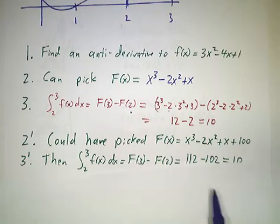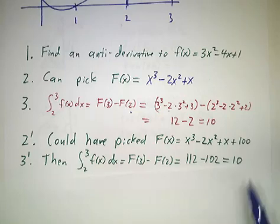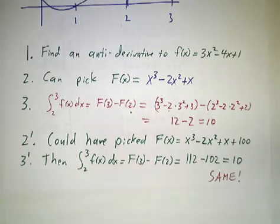If we'd done that, then F(3) would be 112 instead of 12, and F(2) would be 102 instead of 2, but the difference would still be 10. There are lots of choices for the antiderivative. There's only one right answer.